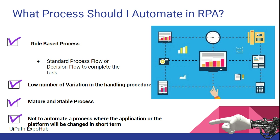You should also not automate a process where the application or platform will be changed in the short term. If the user interface is going to change, or a new application will replace the existing one, you should not choose that process. Always ask these questions before taking up the project: Are you expecting any application changes? Will there be an upgrade? If the change is 1.5 years away, it may still be worth automating.